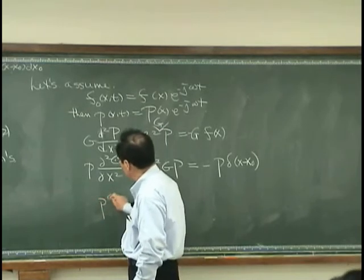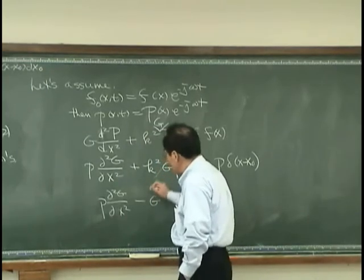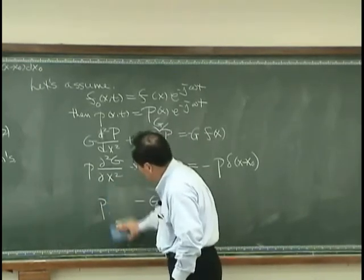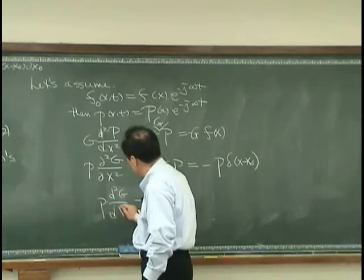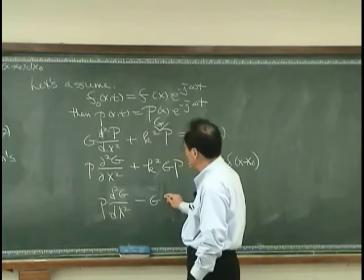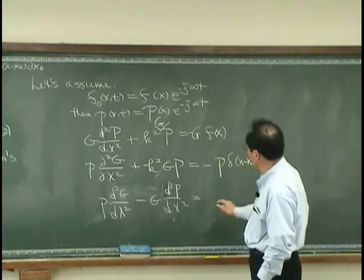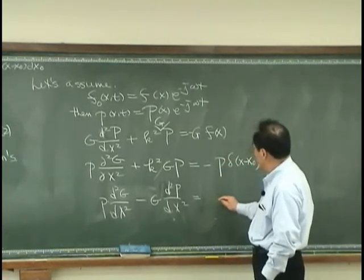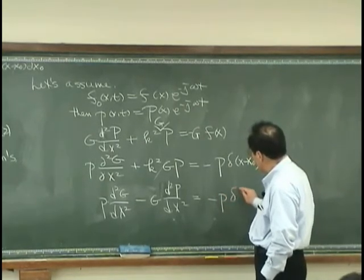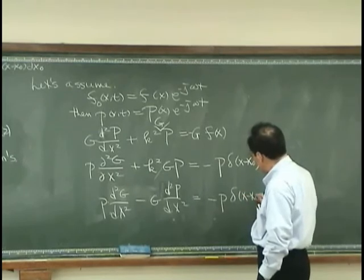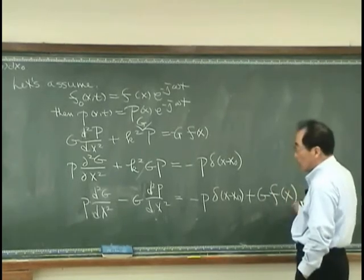Then I have p d²g/dx² minus g d... sorry, sorry about this notation. No partial. This has to be g d²p/dx². So that is equal to, okay, minus p δ(x-x₀) plus g f(x).